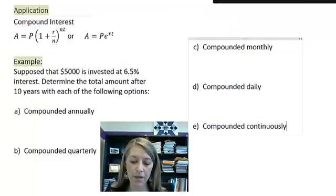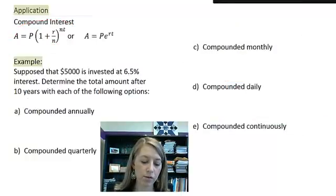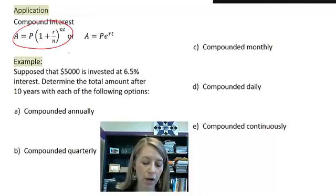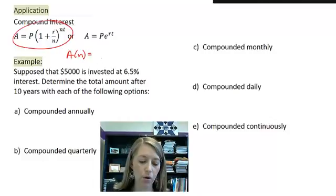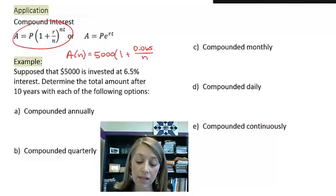So for Parts A, B, C, and D, I'm going to be using this formula where my principal is $5,000, my rate is 0.065, n is the thing that's adjusting in this equation, and then our time was after 10 years. And so I might write this as 10n.